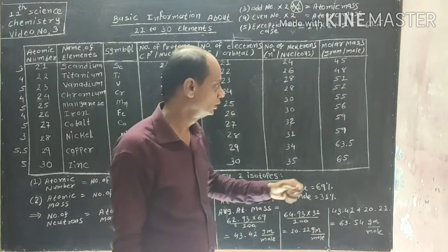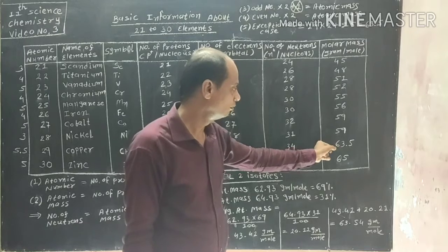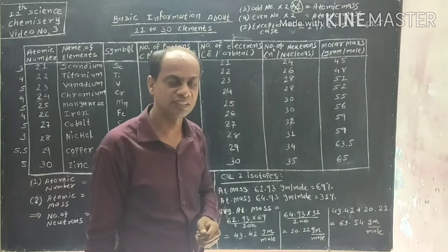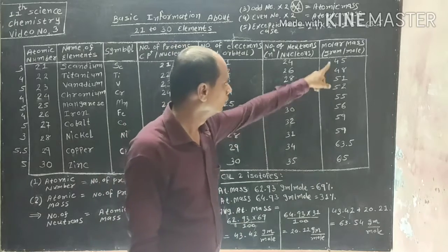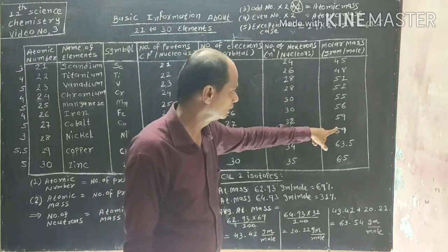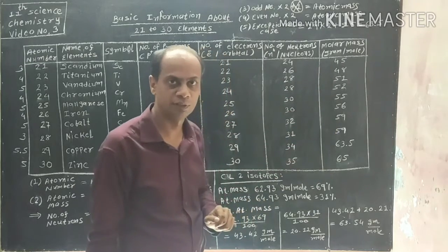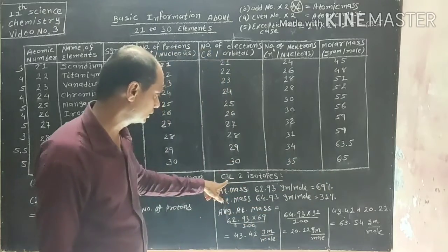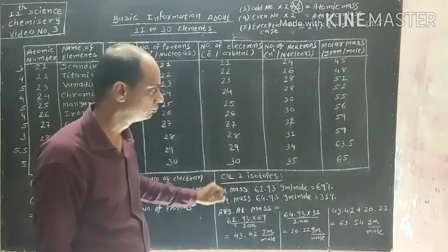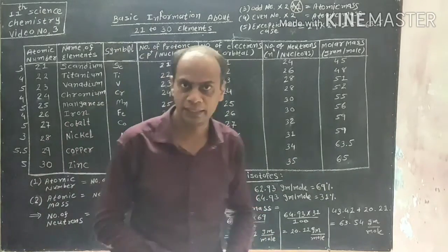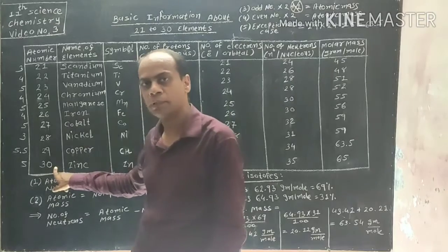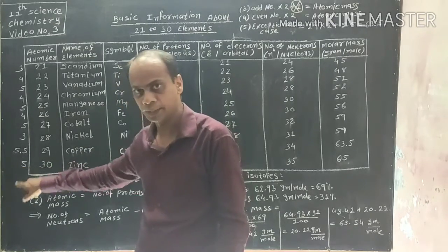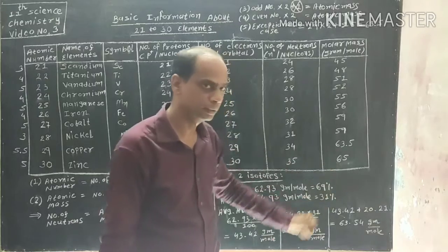Dear students, why is the molar mass of copper considered to be 63.5 and not a round figure? We are going to discuss this now. For element 30, Zinc: multiply 30 by 2 gives 60, add 5, answer is 65.